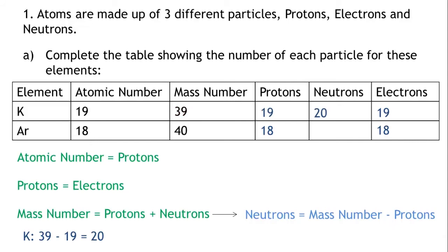Argon has a mass number of 40 and has 18 protons. 40 minus 18 equals 22. Argon therefore has 22 neutrons.